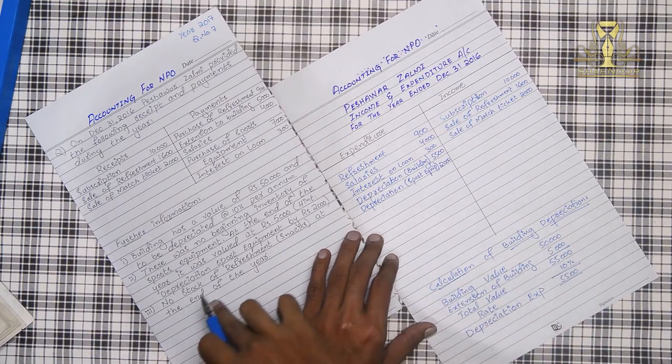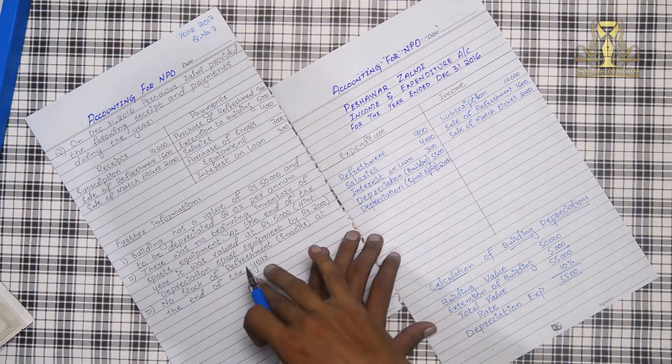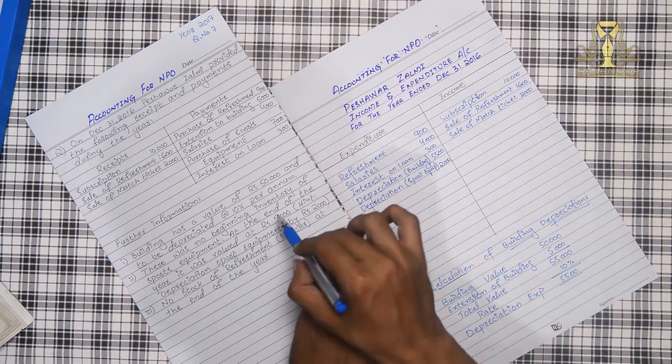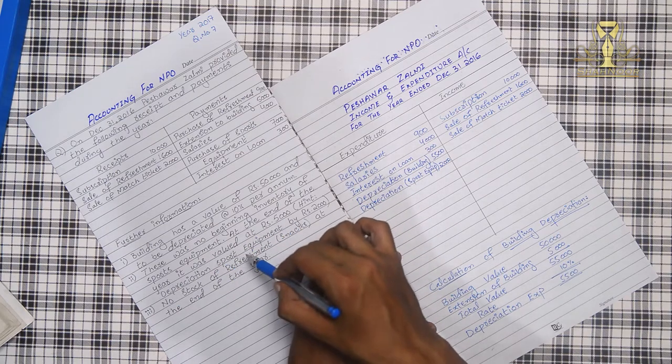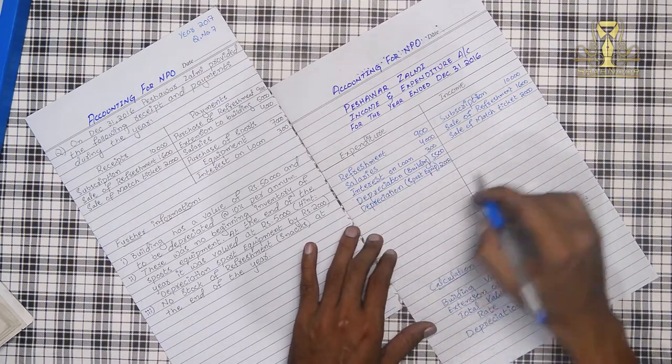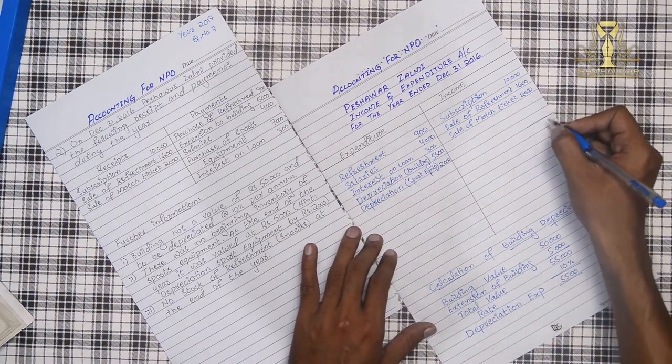No stock of refreshment at the end of the year. This item and the details - there was no inventory. These two items and two information are balance sheet items, so this is why we will not record this in income and expenditure.